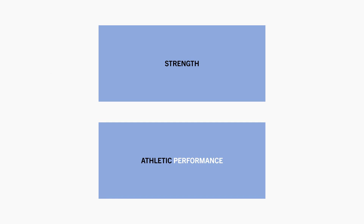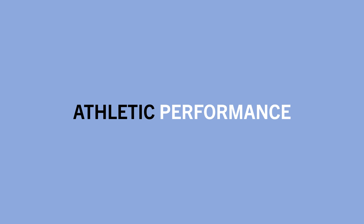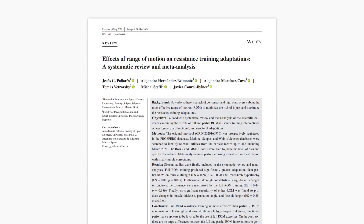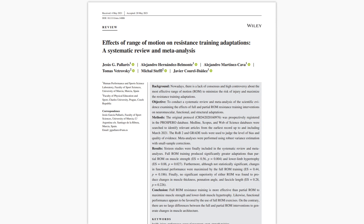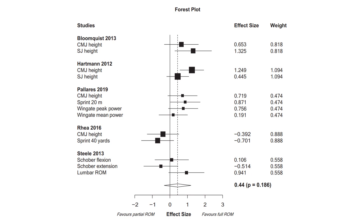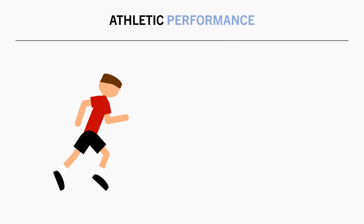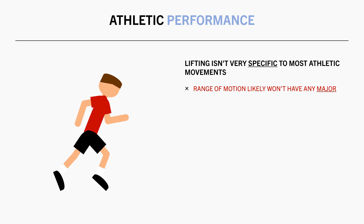And the other performance-related goal worth mentioning is transfer to athletic performance. When it comes to athletic performance, the range of motion we train with doesn't seem to have a major influence on most outcomes. This was seen in this meta-analysis, which compared the effects of training with a full versus partial range of motion on various different outcomes. In terms of functional performance, which included tasks such as vertical jump height, sprint times, and wingate cycling tests, there was a slight trend favoring training with full range of motion, although the differences weren't considered significant. So although athletic performance abides by the principle of specificity, the training performed in the gym just isn't very specific compared with athletic movements anyway. So the range of motion we train with probably won't have much of an impact on the magnitude of direct transfer it has to athletic performance.